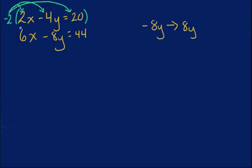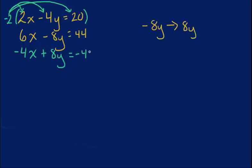So I know negative 2 times positive 2x would give me a negative 4x. And then negative 2 times negative 4y would give me a positive 8y. I have the opposites right here, which is very important when solving using the elimination method. And then negative 2 times negative 20 would give me a negative 40.